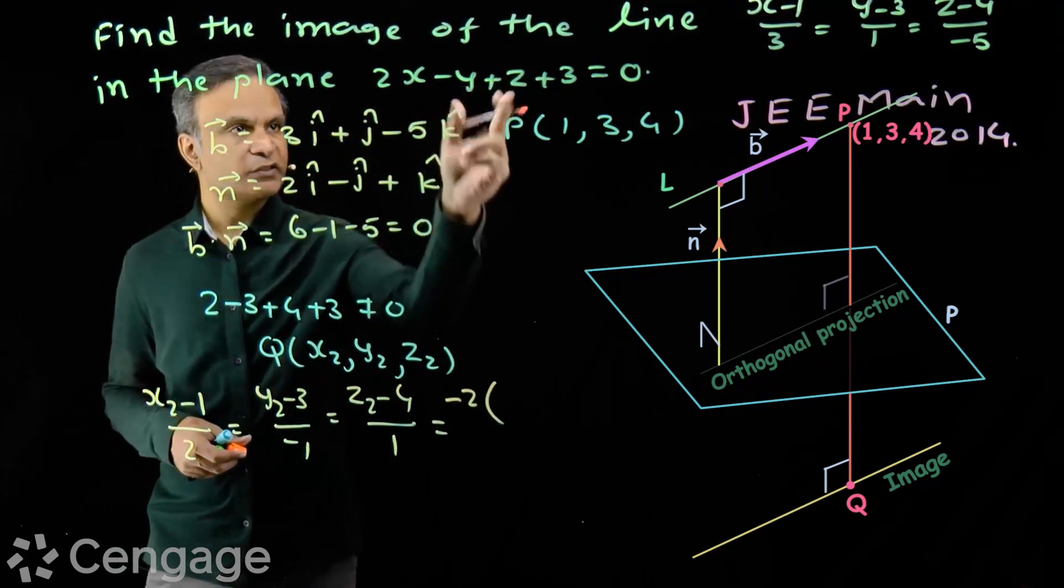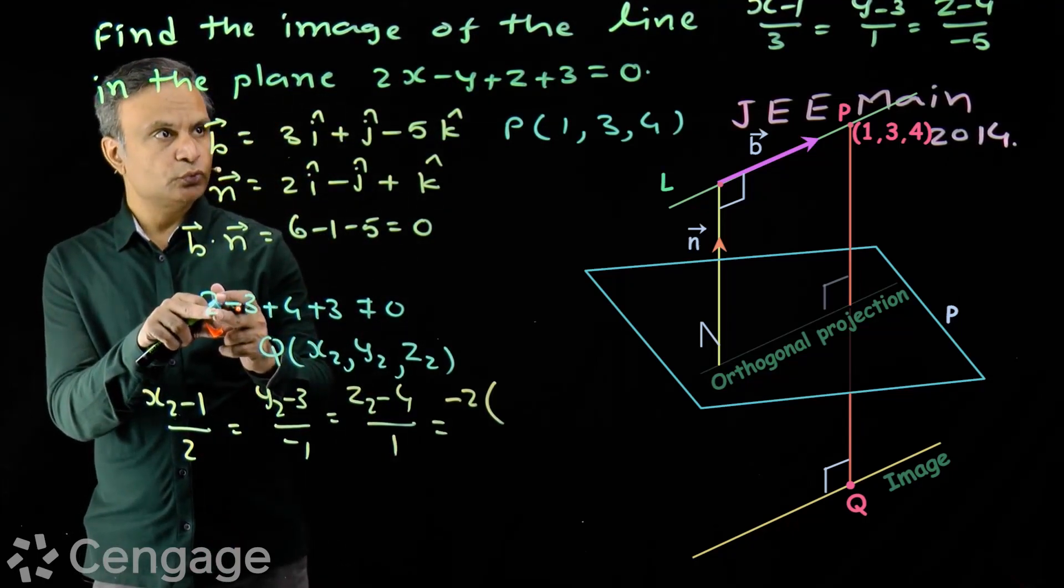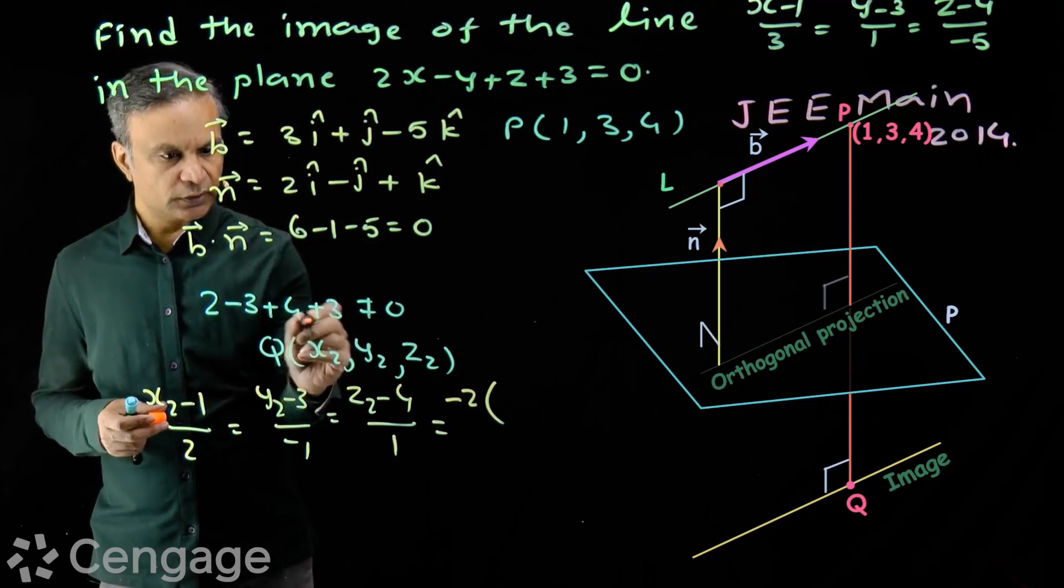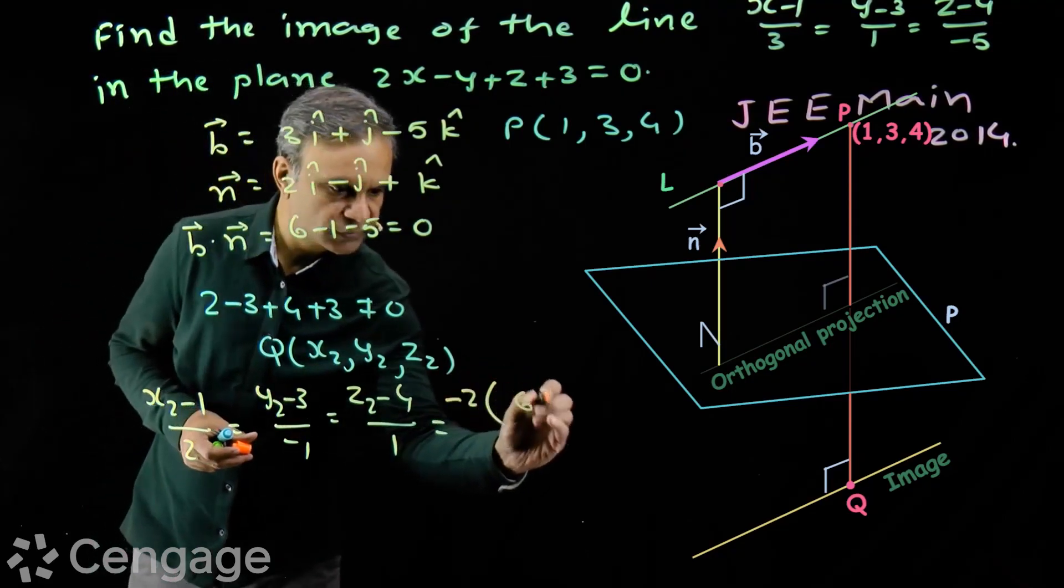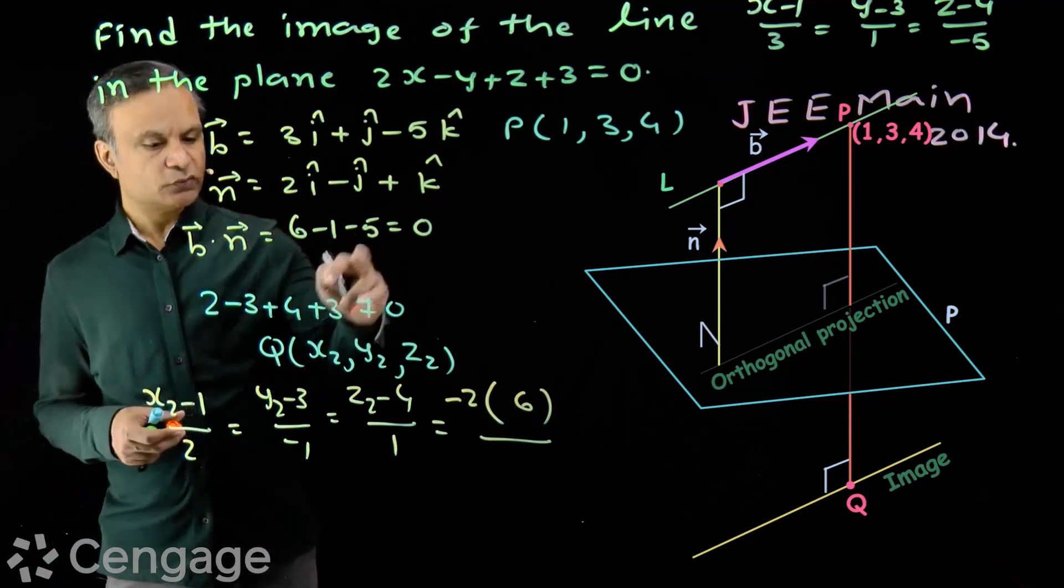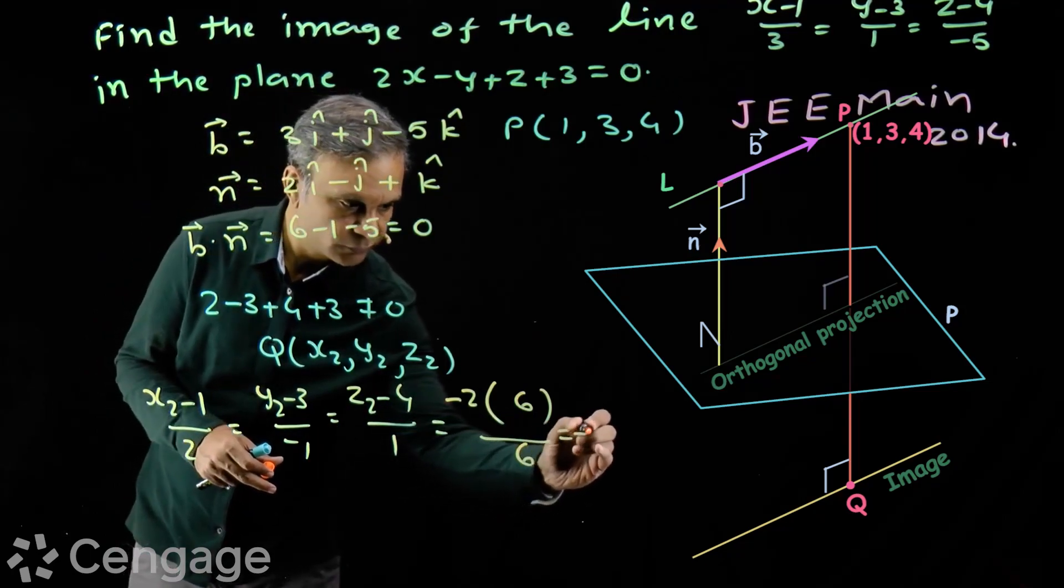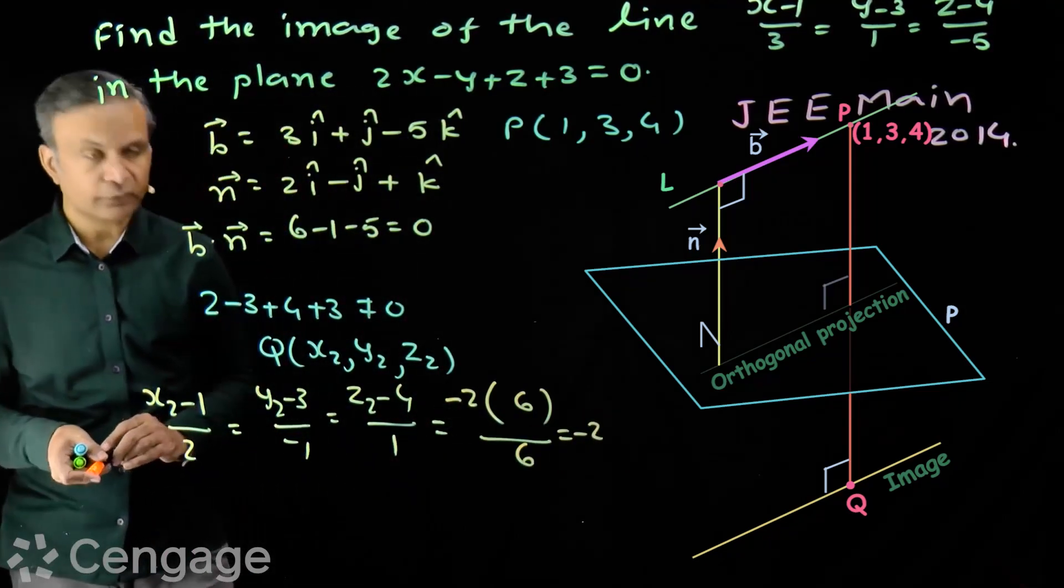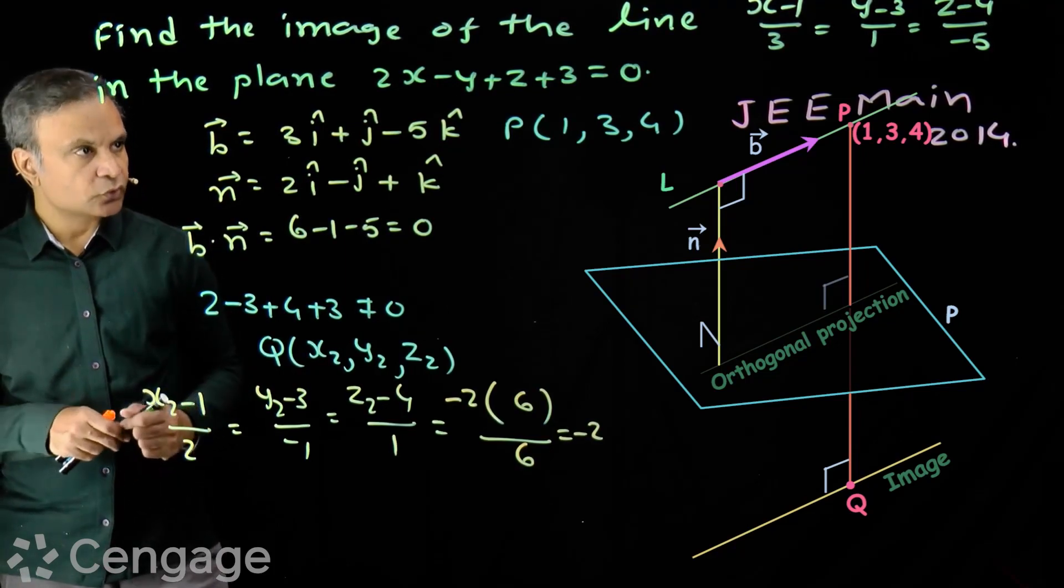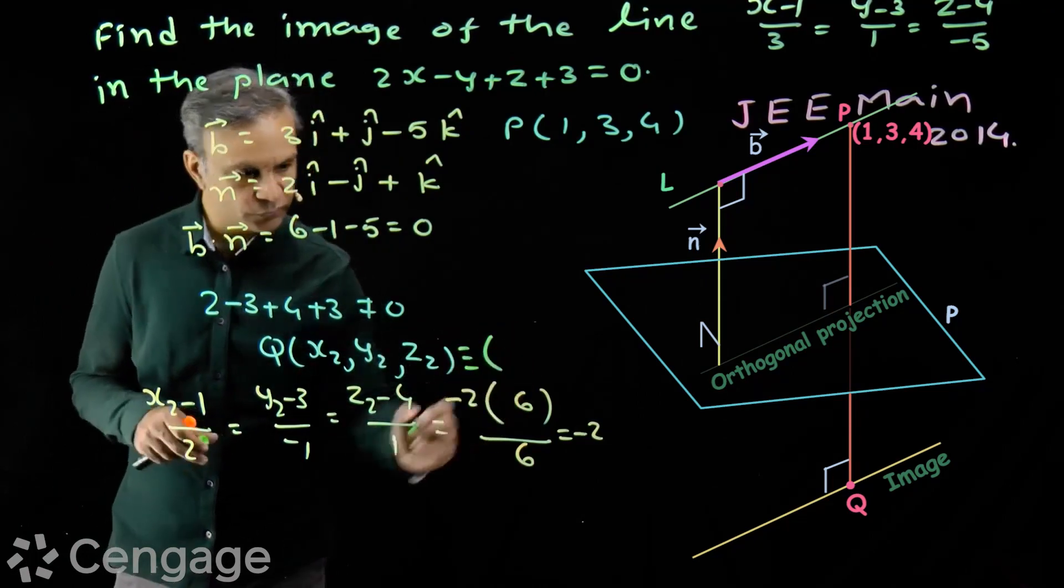Now we put this coordinates in this expression. We get this value 2 minus 3 plus 4 plus 3. This is 6. Six over a square plus b square plus c square. So this value is 6. This is equal to minus 2. We have one good integral value. So coordinates of point Q will be, point Q ka coordinates ho jayenge.